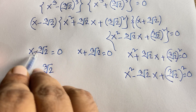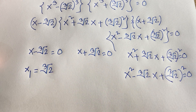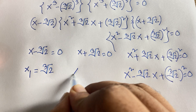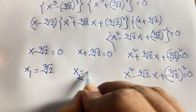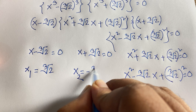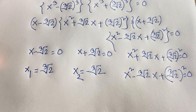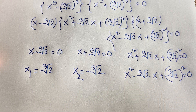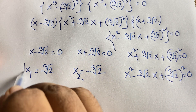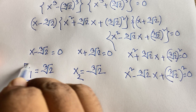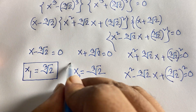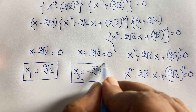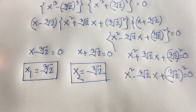From Case 1: x₁ equals ∛2. From Case 2: moving the ∛2 to the other side gives x₂ equals negative ∛2. So our first two answers are x₁ = ∛2 and x₂ = −∛2.